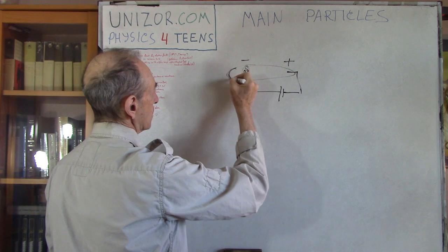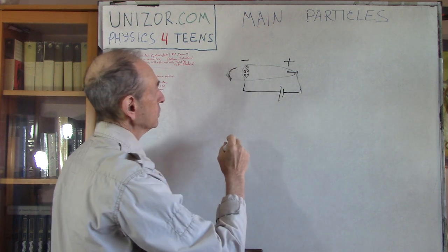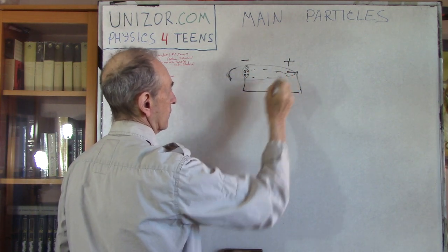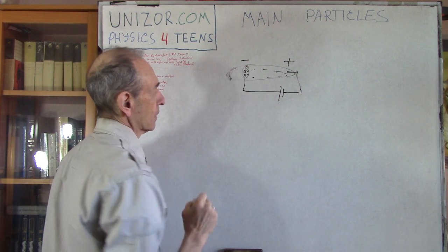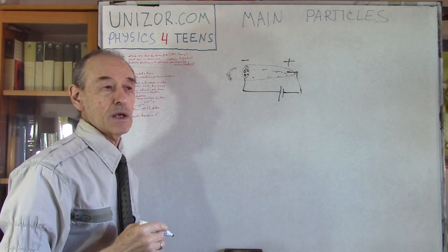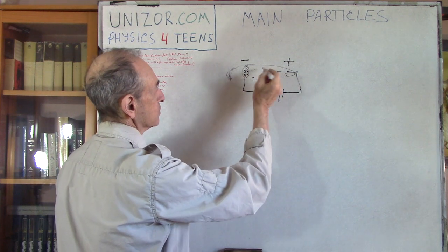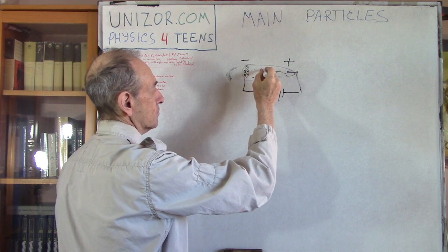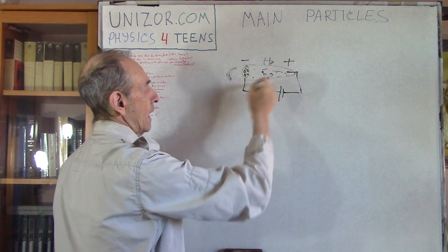What they did was they put the cathode but with holes. This is a cathode which is minus, this is plus. Here they put some fluorescent material and what's interesting is that when with high voltage, they already knew that electrons are basically going this way.